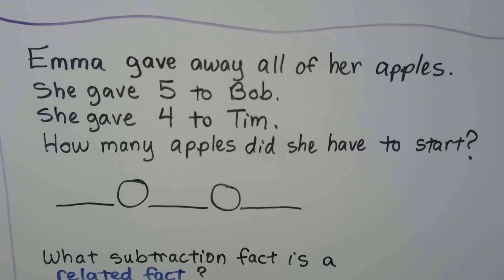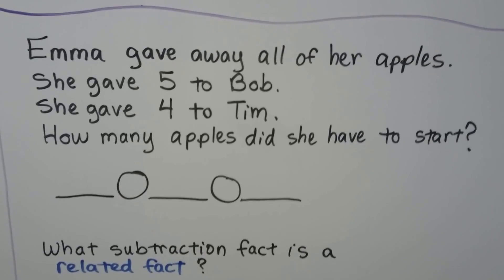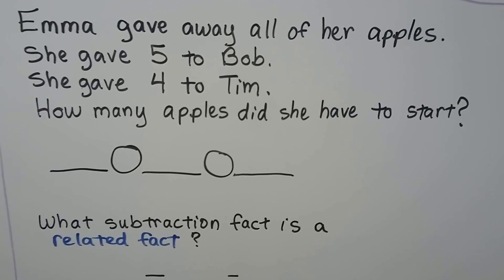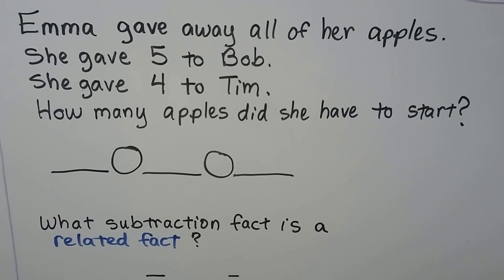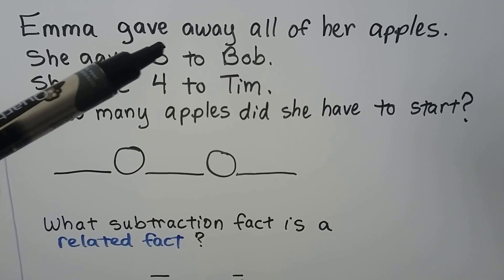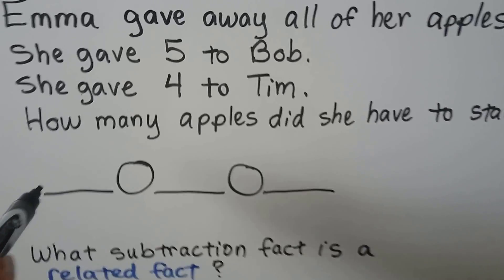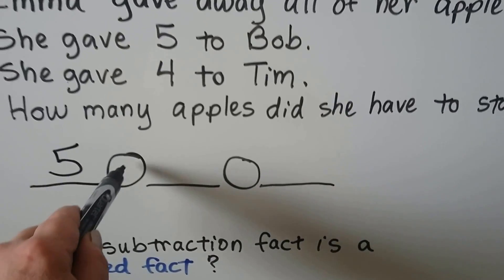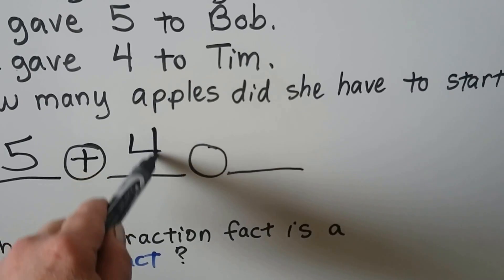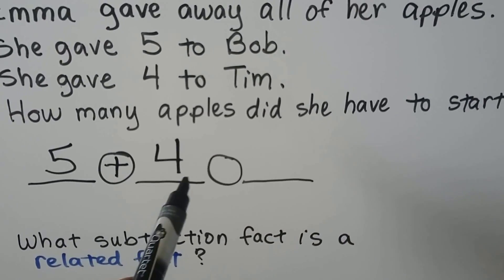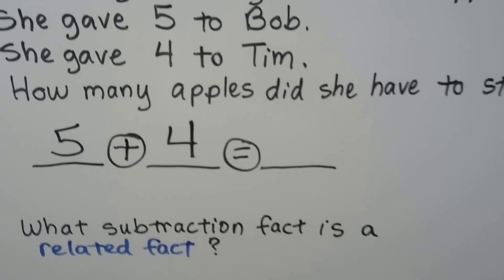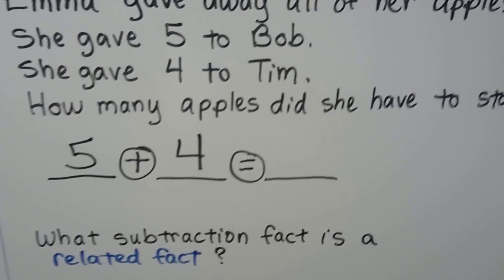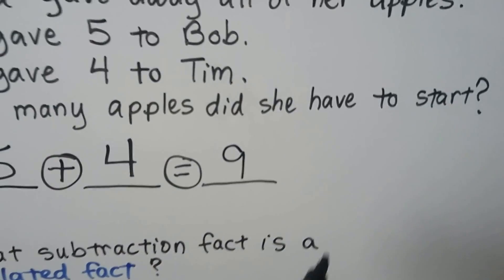Emma gave away all of her apples — it doesn't tell us how many, just that she gave them all away. She gave 5 to Bob and 4 to Tim. How many apples did she have to start? She gave all of them away, so we add: 5 plus 4. Counting on from 5: 5, 6, 7, 8, 9. So she had 9 apples to start.